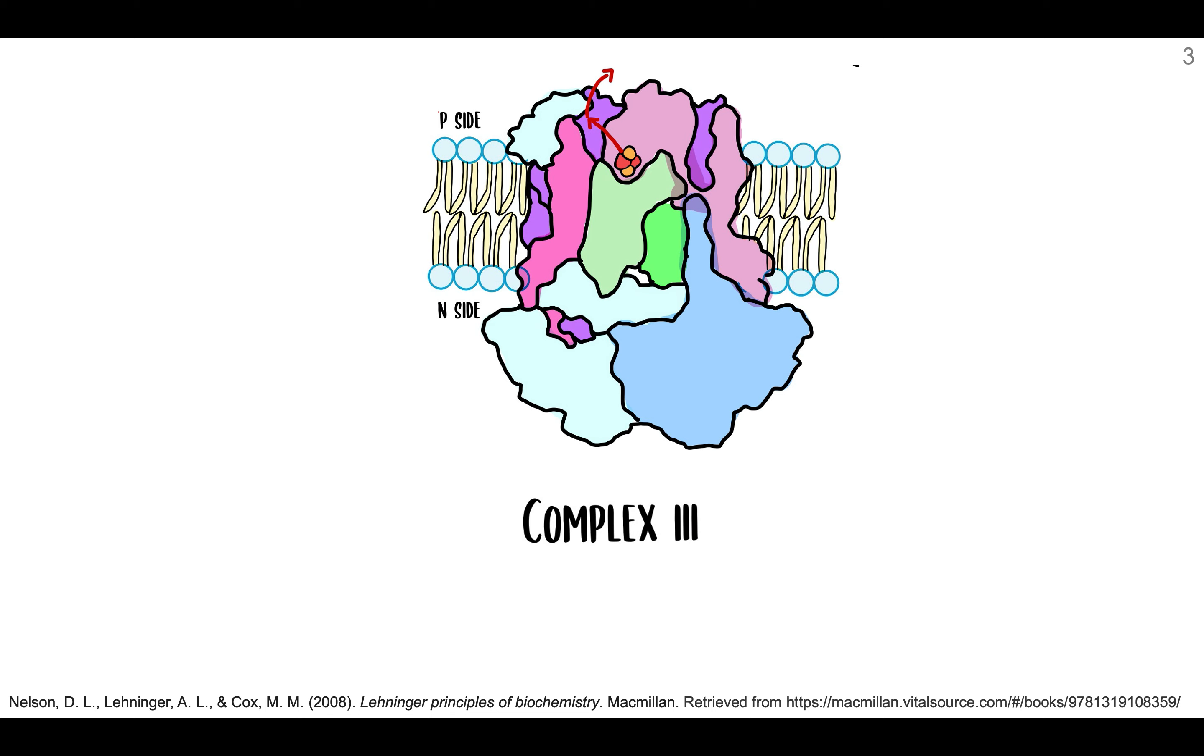And just like I mentioned when talking about complex one, there are compounds that are able to inhibit the flow of electrons, and within complex three you have myxothiazol, and this compound prevents the electron flow from ubiquinol or QH2 to the Rieske iron-sulfur protein by binding to ubiquinone near the iron-sulfur clusters.